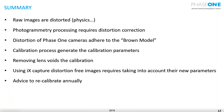To summarize: raw images are always distorted, and in photogrammetry processing we need to correct the distortions. Phase One camera distortions adhere to the Brown model — predominantly radial, with very small tangential components. The calibration process generates the calibration parameters. If you remove the lens and put it back, it is never in exactly the same place, so the calibration changes. If you use IX Capture distortion-free images, take into account the new parameters. We advise recalibrating cameras on an annual basis to ensure nothing has changed.